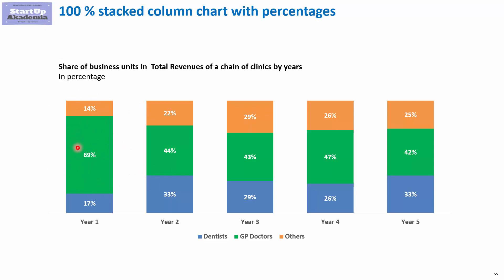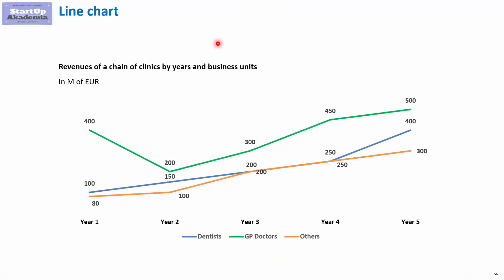The share of GP doctors goes down from 69% to 42%. Another option for this sort of data is the line chart. This is a little bit easier for seeing the trends for each business unit, as we have lines showing how they behave over time.